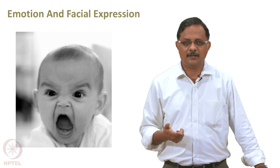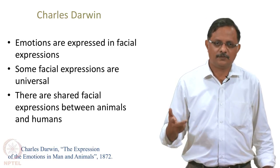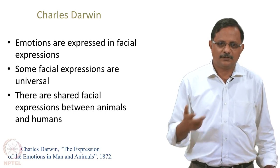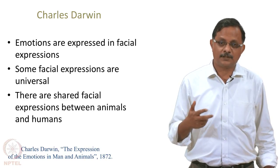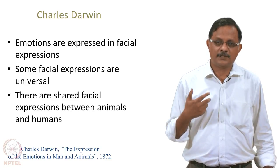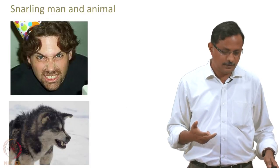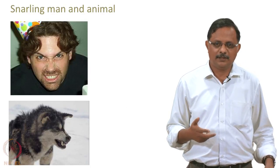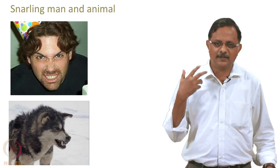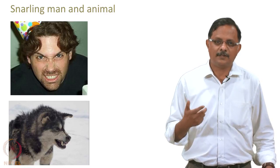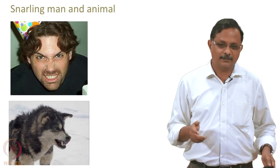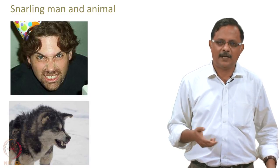Work on classifying facial expressions has been done by Charles Darwin, who is also the theorist of evolution. Darwin noticed that emotions are expressed in facial expressions and that many facial expressions are universal — not only among humans, but certain facial expressions are shared between animals and humans. Look at this example: here is a snarl seen in a human and an animal. You can see the bearing of the canines, the lifting of the upper lip, and the furrowing of the eyebrows — you can see the parallels.